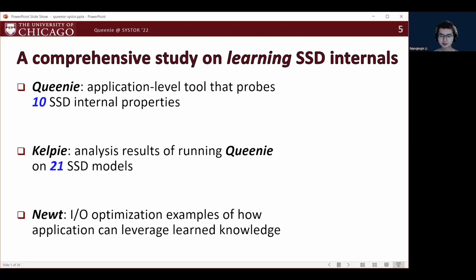Newt is a set of IO optimization examples to demonstrate how the IO stack can leverage the learned knowledge to achieve better performance.